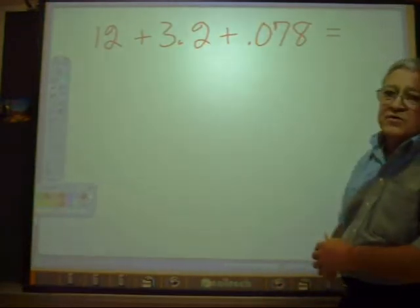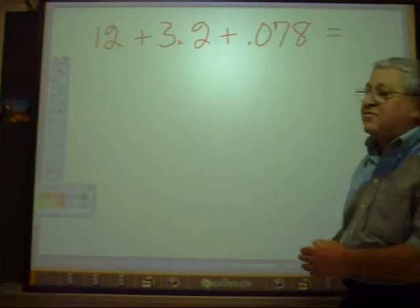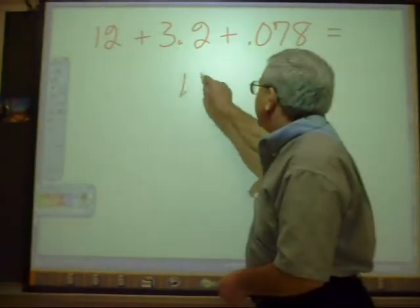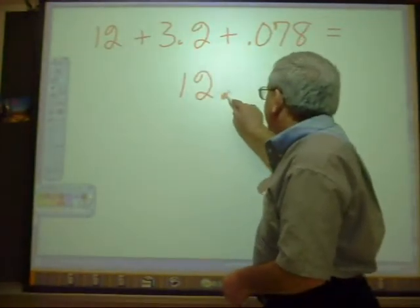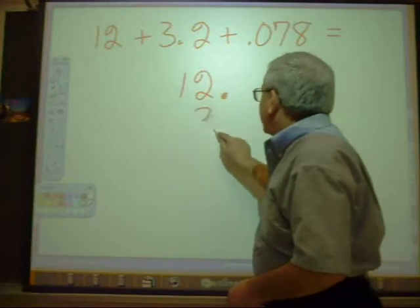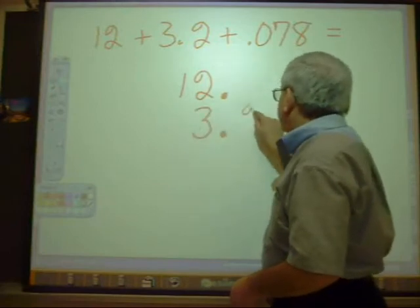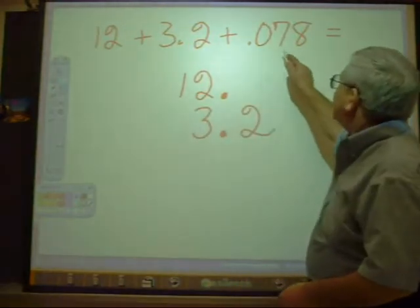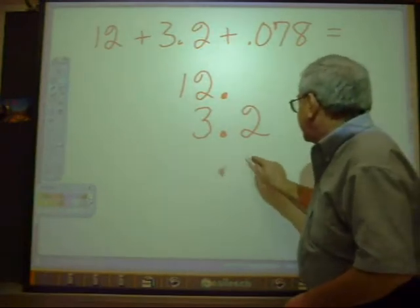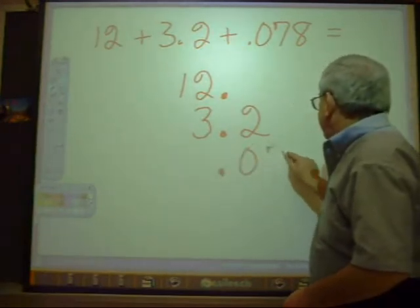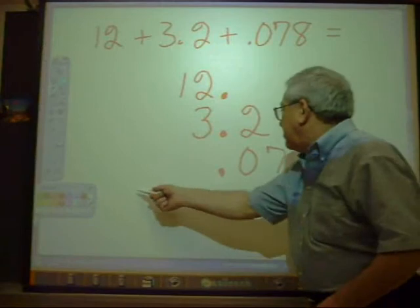So here we have a twelve. Twelve has no decimal point, so we find it at the end. So we have twelve point. Three point two, we're going to line up the decimal points like so. And point zero seven eight, point zero seven eight. Then we put our line.